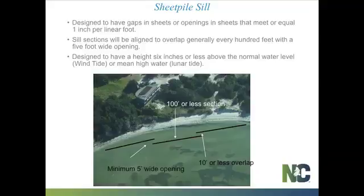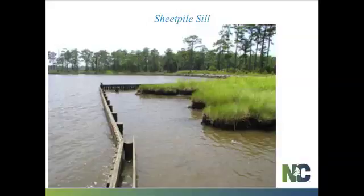For sill height, consider tides, water depths, and expected wave conditions. The goal is to keep the structure as low as possible — generally six inches or less above normal water level, perhaps up to a foot in high-energy situations. A vertical structure like sheet pile should be designed to go underwater in a big storm; it won't fare as well as rock under storm conditions. Sheet pile sills are built similar to a bracket with soldier pilings, top and bottom whalers, and sheets screwed to the whaler system.